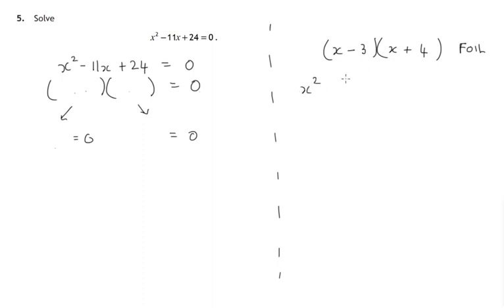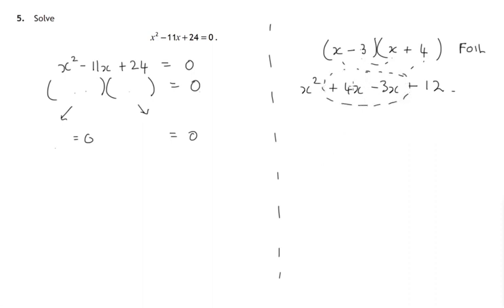First: x times x gives x squared. Outsides: x times 4. Insides: negative 3 times x. Lasts: negative 3 times positive 4 gives negative 12. You'll notice that the inside and outside terms combine to give you the middle term of that quadratic expression — 4x minus 3x — which comes from here and here.